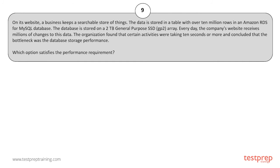Question number nine: On its website, a business keeps a searchable store of items. The data is stored in a table with over 10 million rows in an Amazon RDS for MySQL database. The database is stored on a 2TB general-purpose SSD array. Every day, the company's website receives millions of changes to this data. The organization found that certain activities were taking 10 seconds or more and concluded that the bottleneck was the database storage performance. Which option satisfies the performance requirement?